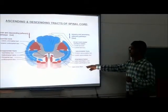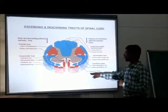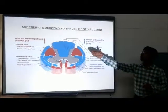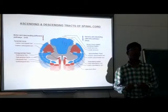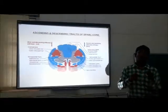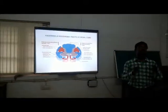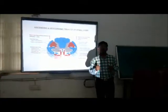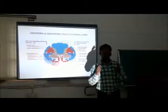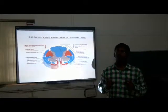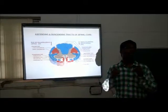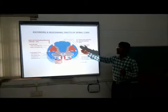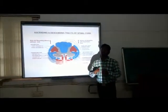The fourth minor tract is the spinovoluntary system. On the right side, there are the motor and descending tracts of the spinal cord. This is because this tract carries motor impulses from the central nervous system to the muscles, and they mainly control motor activities and the activities of skeletal muscles. This system is divided into the pyramidal tract and the extrapyramidal tract.